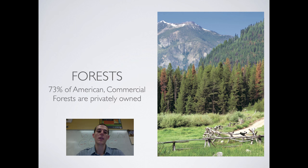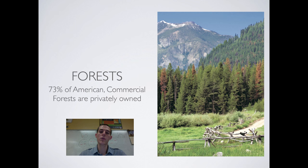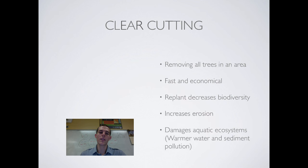Next, I want to move on to forests. In America, 73% of our commercial forests — those used for commercial timber production — are privately owned. A portion of commercial logging happens on public lands, but mostly it's on privately owned forests. Talking about strategies for timber harvesting, the first is clear-cutting, which is removing all trees in an area.